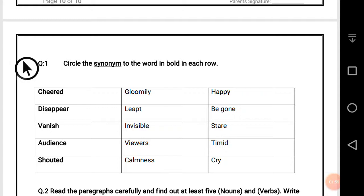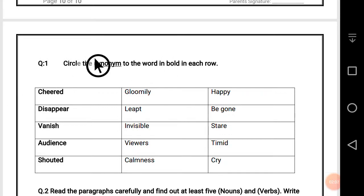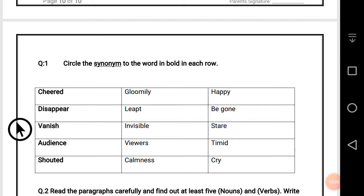Question number one: circle the synonym of the word in bold. Cheer — cheer means happy. Disappear — disappear means to be gone or vanish. Vanish means invisible. Audience — the synonym of this word is viewers.